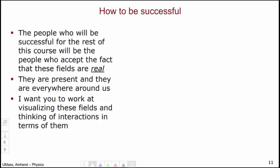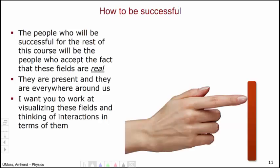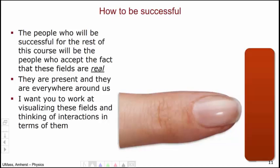So how to be successful for the rest of this course? The people who will be successful will begin to really think about the fields as being real objects. These fields — gravitational fields, electric fields, magnetic fields — are truly present and they are everywhere around us. Work on visualizing these fields and thinking of interactions in terms of them. For example, when you push on a wall, what's really going on is the charges in your finger and the charges in your wall are both generating electric fields, and these electric fields cause the charges to repel. The charge in your finger generates an electric field; the charge in the wall interacts with that field and is repelled. That's the origin of your sensation of pushing against a wall — through this intermediary of the electric field.